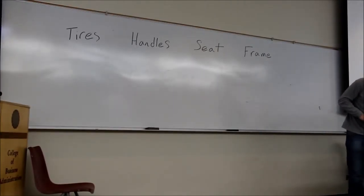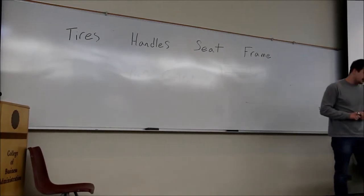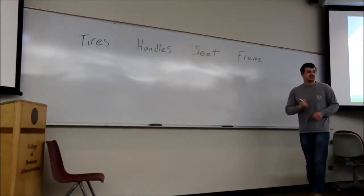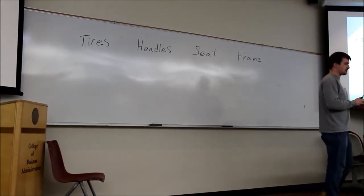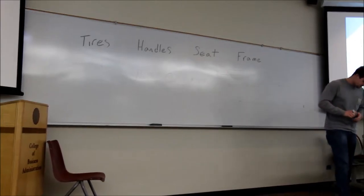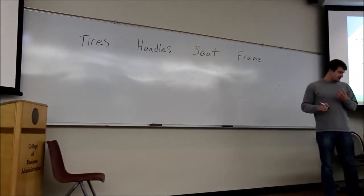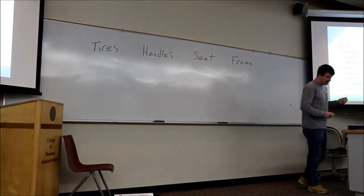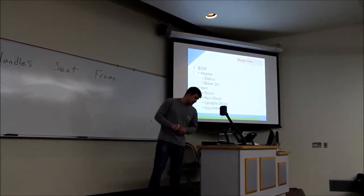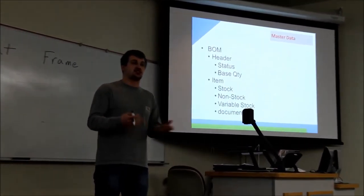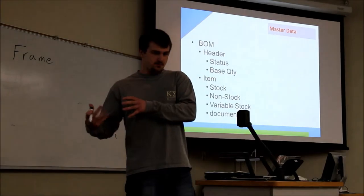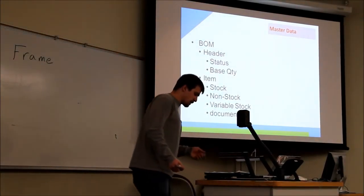Our status would determine what applications are active during the MRP, or what applications is associated with such MRP. And our base quantity is the amount of finished goods that would come from the amount of products in the bill of materials. So if our base quantity is five, that means we produce five bikes with the quantity we would have of these materials. There are four main types of items that are associated with the bill of materials. Stock items, items that are kept in stock. Non-stock items, which are not directly assigned to the warehouse system.